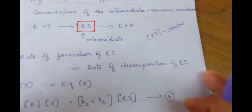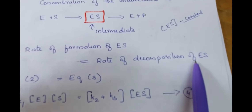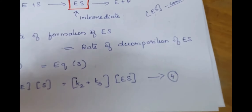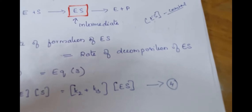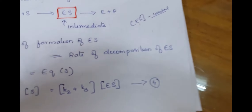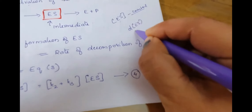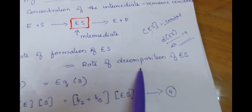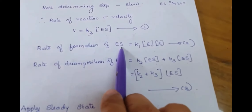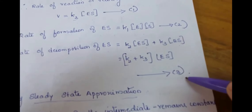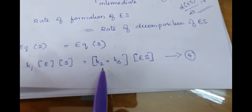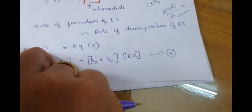When concentration of ES is constant, the rate of formation of ES equals the rate of decomposition of ES, and d[ES]/dt = 0. So equation 2 equals equation 3: K1 × [E] × [S] = (K2 + K3) × [ES].